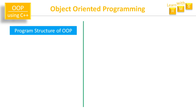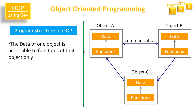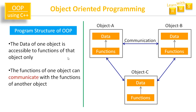Let us see the program structure of OOP. There are three objects: object A, object B, and object C. Each object has its own data and functions. The data of object A is accessible to the functions of object A only — not to functions of objects B and C. However, the functions of one object can communicate with functions of another object, as indicated by the bidirectional arrows showing communication between object A and B, A and C, and B and C.